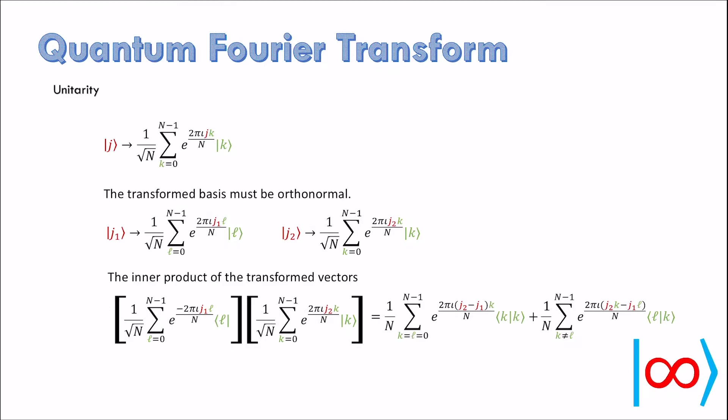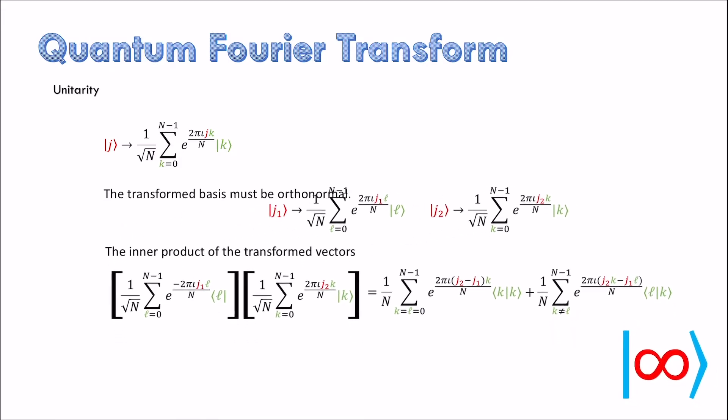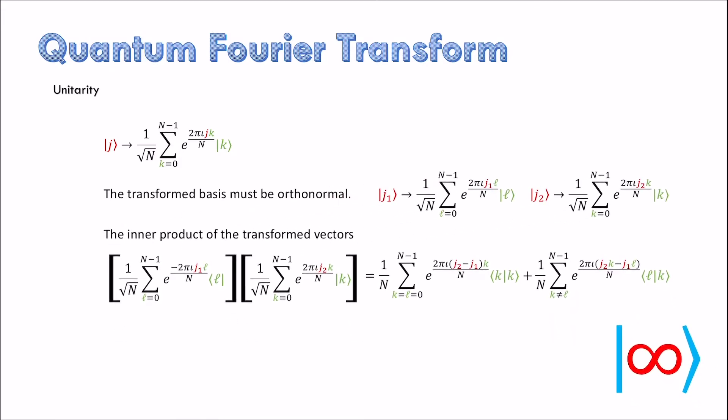This inner product is distributive and we can multiply term by term. The result can be partitioned into two groups. The first group has terms with same K and L, values in the second group has the rest. Due to ortho-normality of the computational basis, the inner products in the first group are 1 and the inner products in the second group are 0.